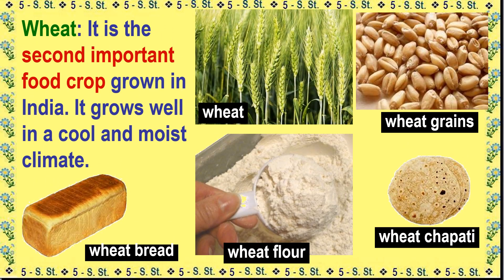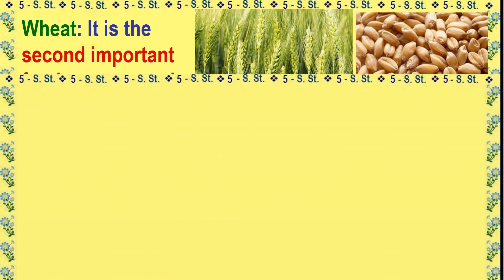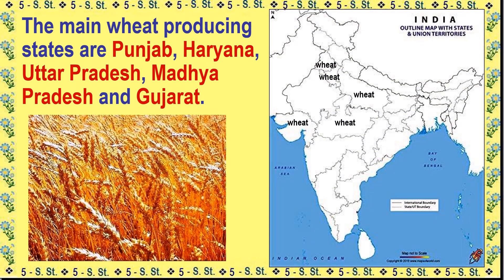Wheat is the second important food crop grown in India. It grows well in a cool and moist climate. The main wheat producing states are Punjab, Haryana, Uttar Pradesh, Madhya Pradesh, and Gujarat.